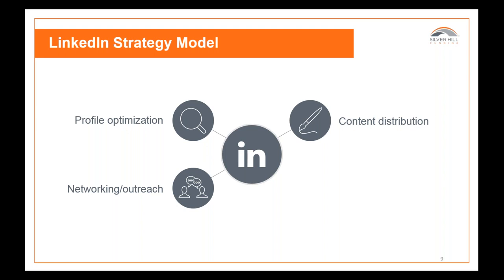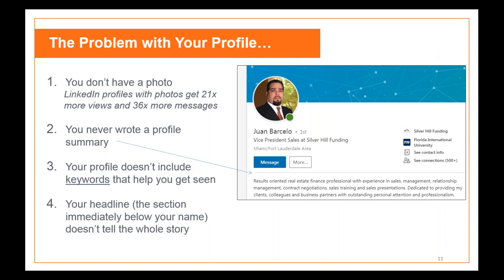First is optimizing your LinkedIn profile. One of the most common problems is a lack of a photo. LinkedIn profiles with photos get 21 times more views and 36 times more messages — those numbers come from LinkedIn themselves. If you've ever gotten a message from someone without a picture, it's hard to trust them. It's really easy to get a photo; a friend can take an iPhone photo that works great.